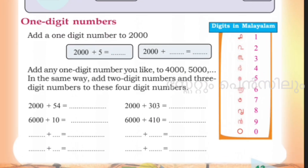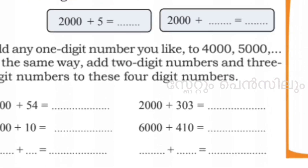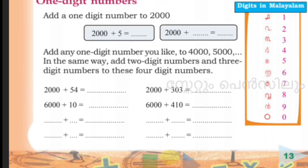You can see: 2000 plus 54 equals 2,054. 6000 plus 10 equals 6,010. Then 2-digit numbers: ones and tens. 2000 plus 303 is 2,303. 6000 plus 410 is 6,410.